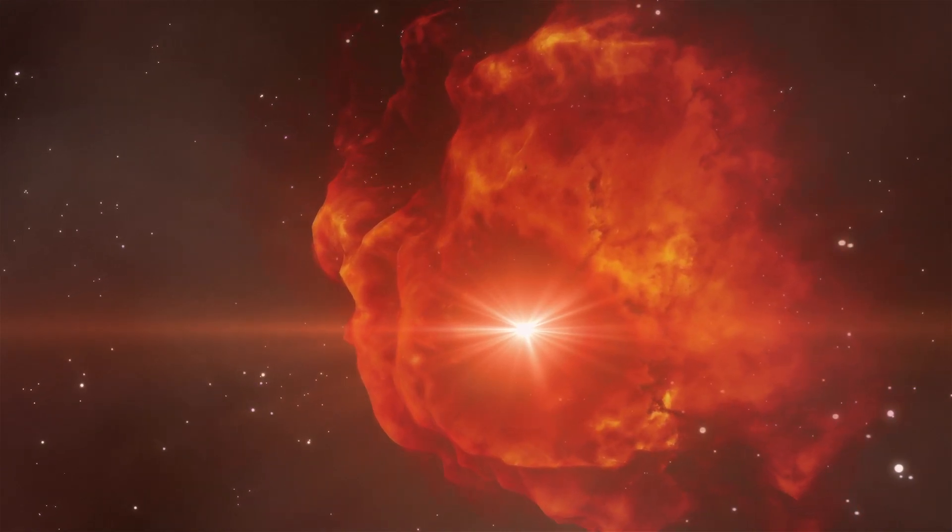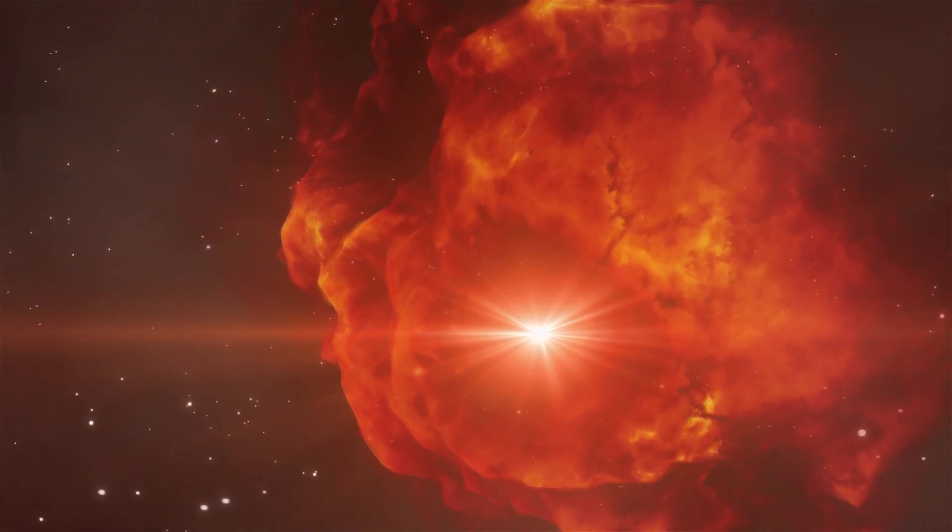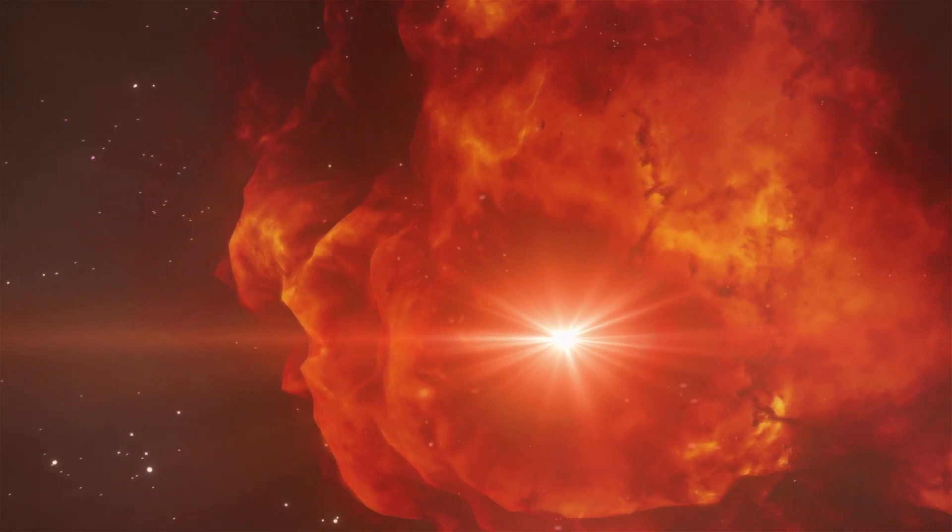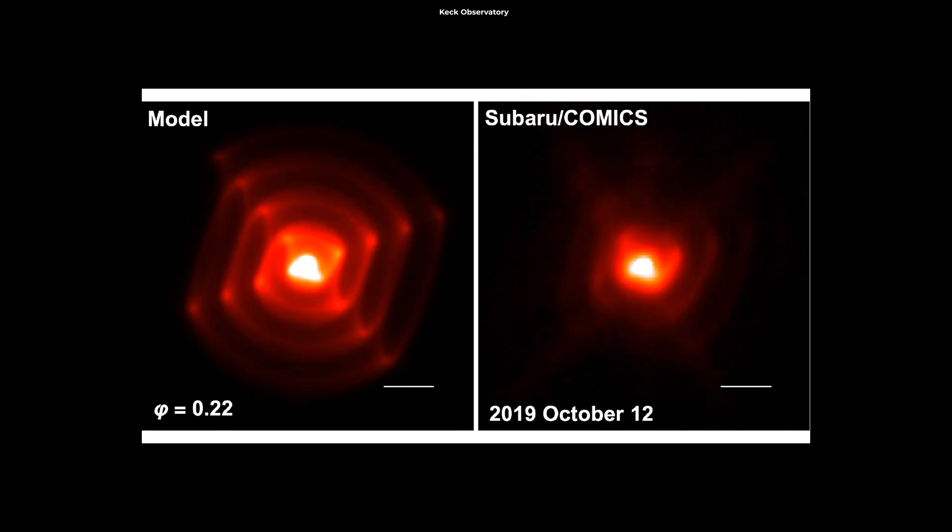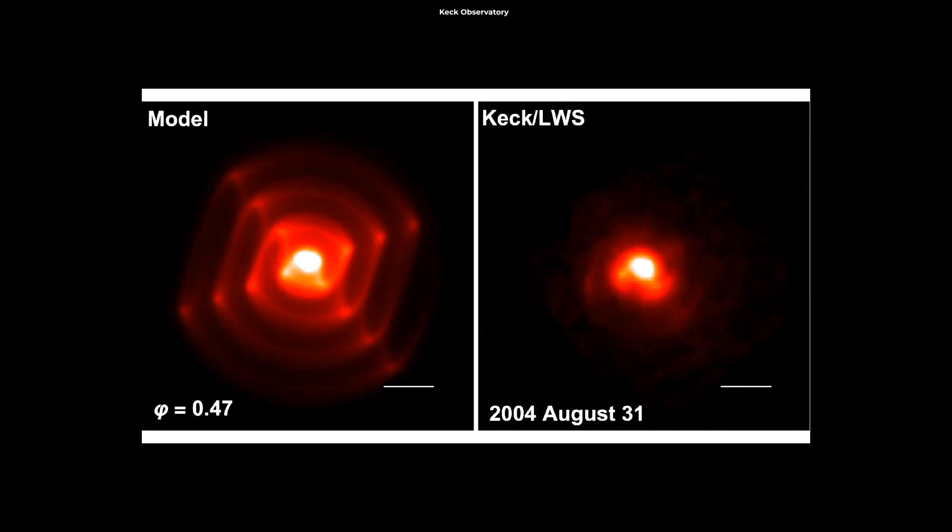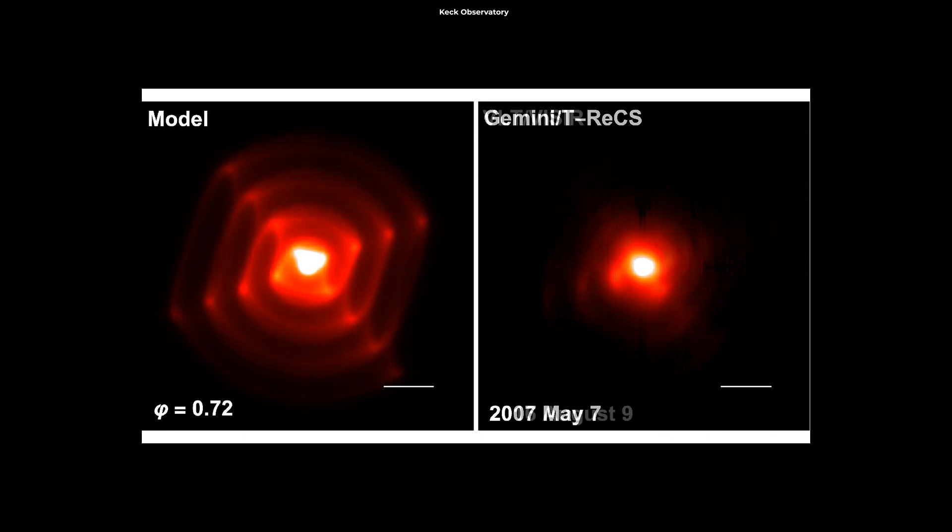WR140 is what's called a Wolf-Rayet star. These are among the most extreme stars known. In a rare but beautiful display, they can sometimes emit a plume of dust into space, stretching hundreds of times the size of our entire solar system.